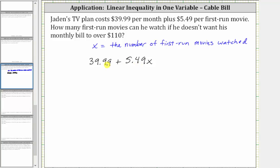This expression represents the total bill amount, where we have the flat fee of $39.99 plus the fee for watching the first-run movies, which is 5.49 times x.